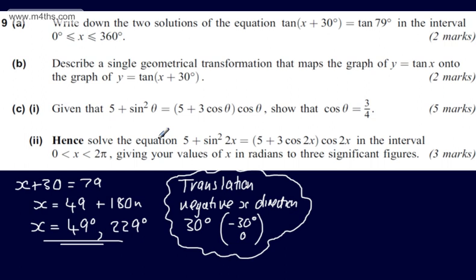In part C, the first part says, given that 5 plus sin squared theta is equal to the quantity 5 plus 3 cos theta multiplied by cos theta, show that cos theta is equal to 3 quarters. The question carries 5 marks.